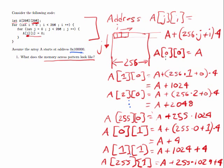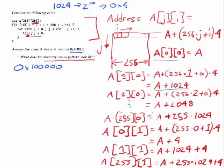So at a of zero zero, the address is a, meaning the first address we're going to access is hex 100,000. Then the second one we're going to access is a plus 1024. I happen to know that 1024 is the same as two to the tenth, which is the same as hex 400 — that four-bit that's lit up is the tenth bit if I count from the right. So a plus 1024 looks like hex 100,400. And every time I add 1024, that's the same as adding hex 400.